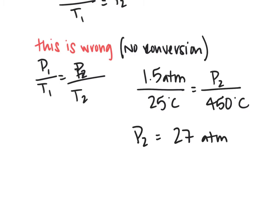This doesn't work because the Celsius-to-Kelvin conversion involves addition — you add 273.15. If it were a multiplication, you could cancel it on both sides. But because it's addition, you cannot cancel it out. You will get the wrong answer every time.